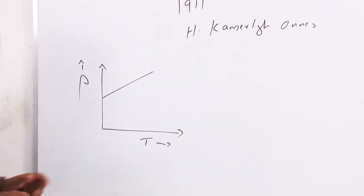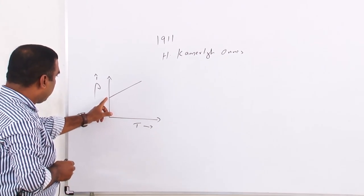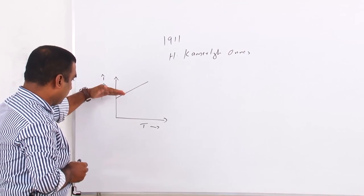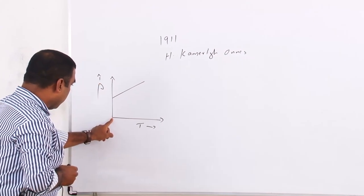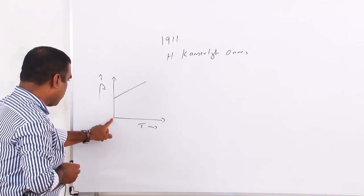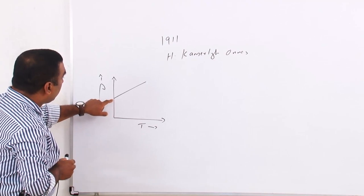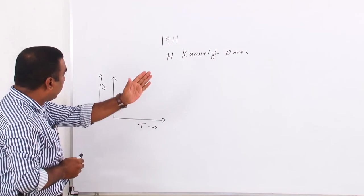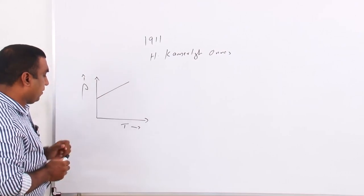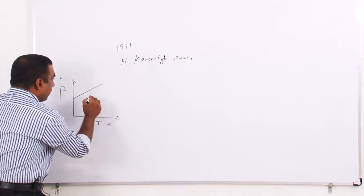At absolute zero, the resistivity has a finite value. Even at absolute zero, the resistance or resistivity is not zero — it has a finite value. And as the temperature increases, the resistivity varies in a linear manner. But this is the case for Nichrome.